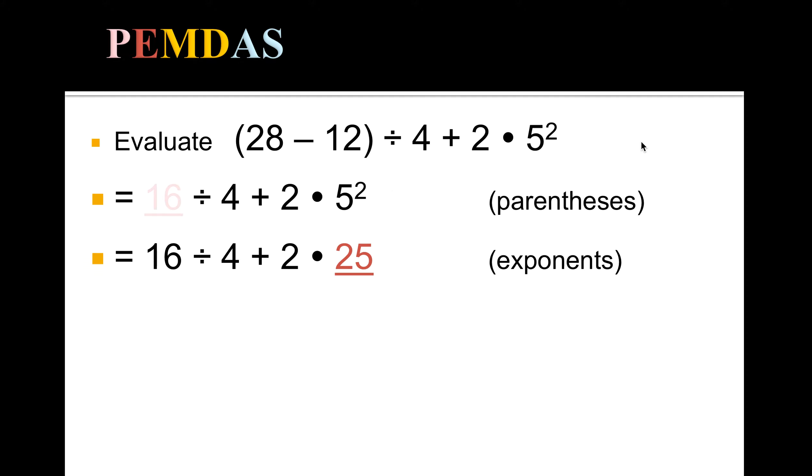That's 25. And now we have division, addition, multiplication, so we're going to do the multiplication and division first, left to right. First the division: 16 divided by 4 is 4. Now the multiplication: 2 times 25 is 50. And then finally we add.